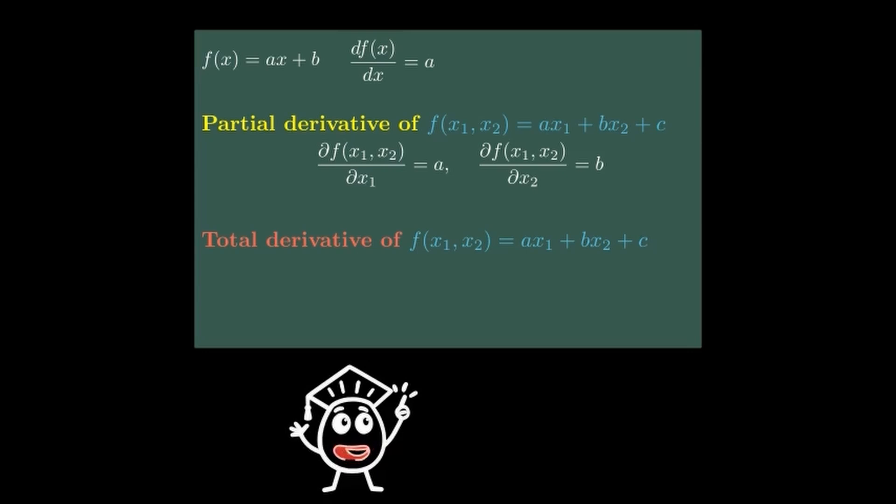The total differential is more global: what if both change a little bit at the same time? Then df = a dx1 + b dx2. Since our function here is linear, this formula is exact. So where does the gradient show up? Right here. It's the vector that collects those partials: gradient f = [a, b]. That's the gradient.